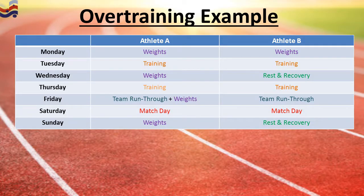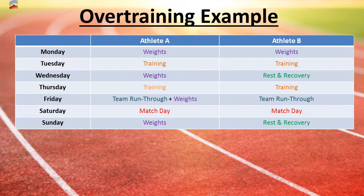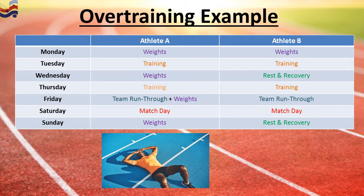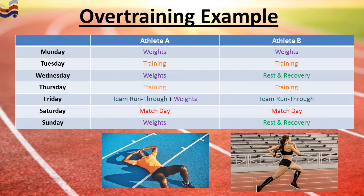Here is an example using a seven-day overview of two athletes who play in the same team. Both take a weights program Monday and train with their team Tuesday. On Wednesday, Athlete B takes a rest and recovery day while Athlete A is back in the gym. Thursday they both train, Friday is a light team run-through — but Athlete A adds a gym session afterwards. Saturday is match day, and Sunday Athlete B rests while Athlete A is back in the gym. Athlete A will eventually burn out, whereas Athlete B, with rest and recovery built in, can continue working at a much higher level.